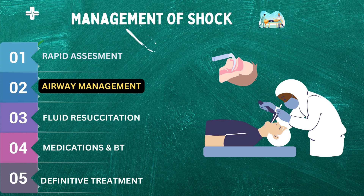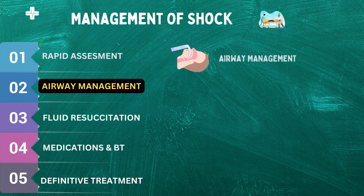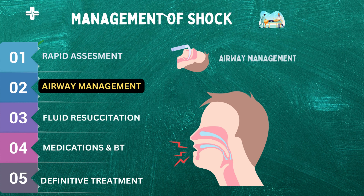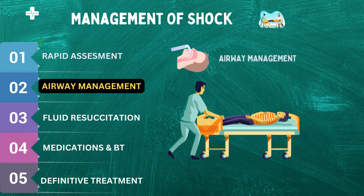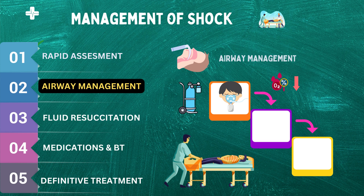Let's learn how healthcare professionals manage the airway in patients in shock. Airway management refers to the process of ensuring a patient's airway is open and able to support ventilation. In patients in shock, airway management can be challenging due to the potential for compromised respiratory function. When a patient arrives in the emergency room in shock, healthcare professionals will assess their airway, breathing, and circulation. If the patient's airway is compromised, they may intervene to ensure adequate oxygenation. The first step is to provide supplemental oxygen through a non-rebreather mask or other oxygen delivery device. If oxygen saturation levels do not improve, healthcare professionals may need to consider more advanced airway management techniques.